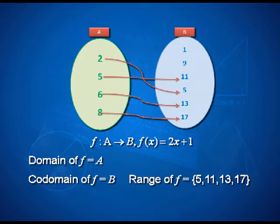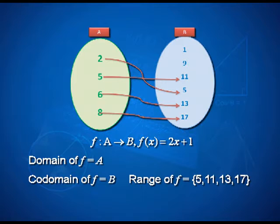The set builder form of the relation is now expressed in mathematical language. The domain of function f is all the inputs — it is nothing but the set A. The co-domain of f is the entire set B, including elements like 1 and 9 which are not connected with any elements of set A. The range of f is only the outputs — the collection of all outputs, which means 5, 11, 13 and 17. So range and co-domain may not be equal, as we saw earlier. And do not forget that f is always a relation.